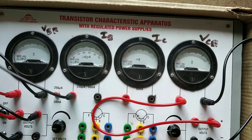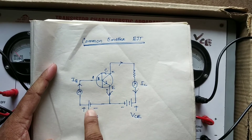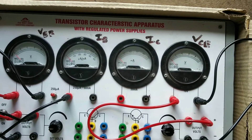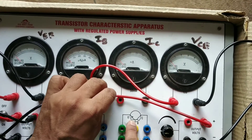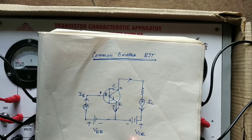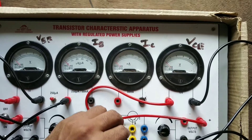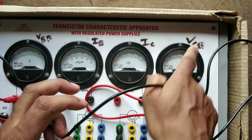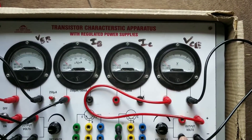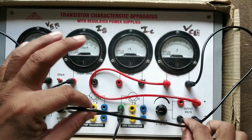VEB negative is connected to the emitter. This is your VEB negative terminal, and it has to be joined here at the emitter point.